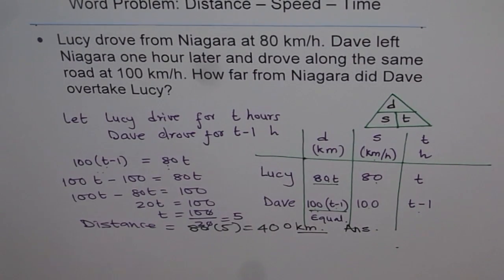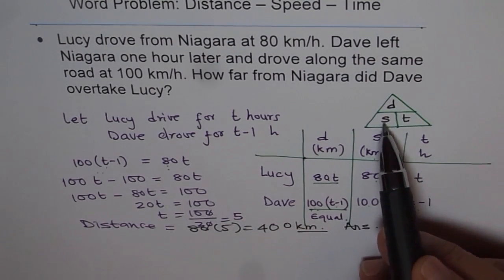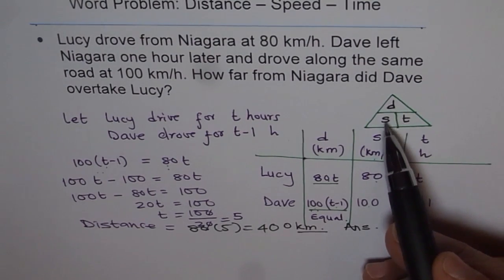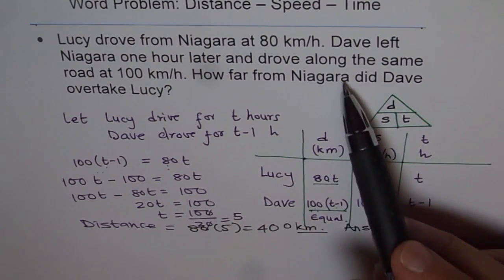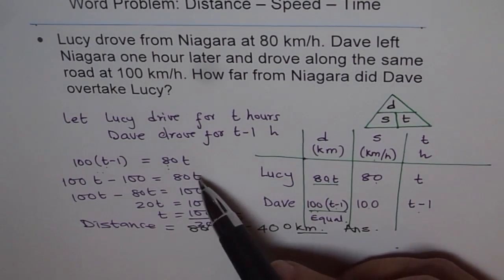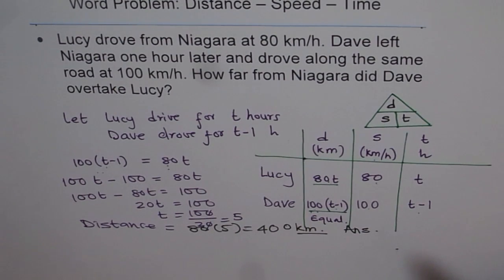To summarize, follow these steps for distance, speed, and time problems: remember the relation — distance equals speed multiplied by time, or time equals distance divided by speed. Translate the data into a table. Form your equation. Solve the equation to get the answer. I hope that is absolutely clear and simple to understand.